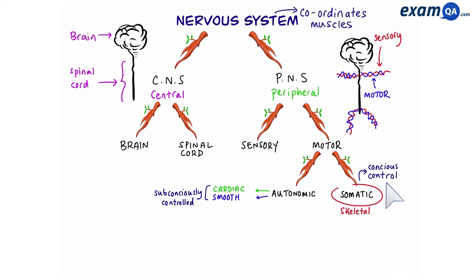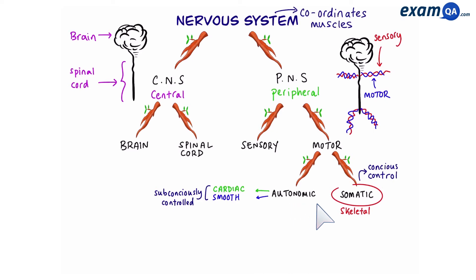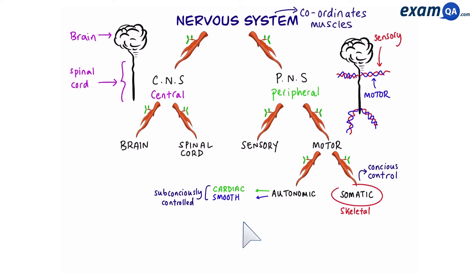So here we have our three muscles. Skeletal muscle is controlled by the somatic nervous system, and cardiac and smooth muscles are controlled by the autonomic nervous system. Remember, if it's not somatic, it must be automatic. Skeletal muscles contract and relax within the somatic nervous system. However, for cardiac and smooth muscles, their contraction and relaxation involves two different types of neurons: sympathetic and parasympathetic.